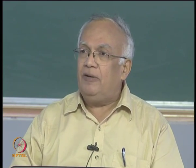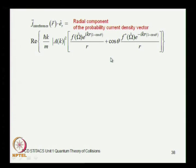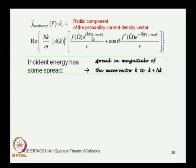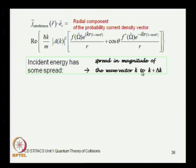This is the radial component of the current density vector for the interference term, and we obtained this expression. What we realized is that there is a k dependence here — k dependence is the momentum dependence or energy dependence. Even as we imagine a strictly monoenergetic beam of incident particles, you actually have a little bit of spread in the energy, which translates to the momentum in units of h-cross going from k to k plus delta k.